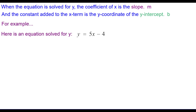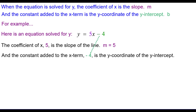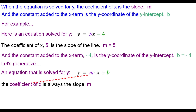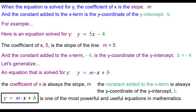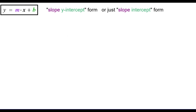For example, here's an equation solved for y. The coefficient of x — which is 5 — is the slope, so m equals 5. The constant added to the x term — negative 4 — is the y-coordinate of the y-intercept, so b equals negative 4. Generalizing: y equals mx plus b, where the coefficient of x is always the slope m, and the constant is always the y-coordinate of the y-intercept b. This is called the slope-intercept form, or slope y-intercept form.